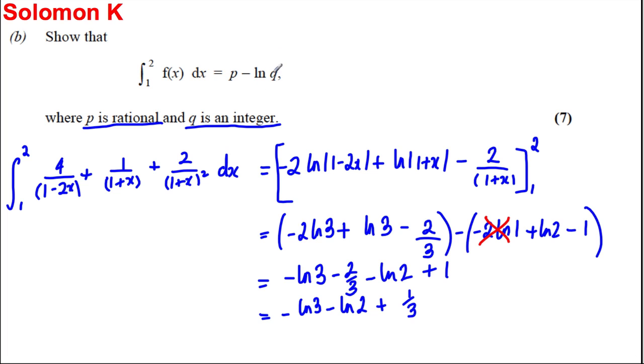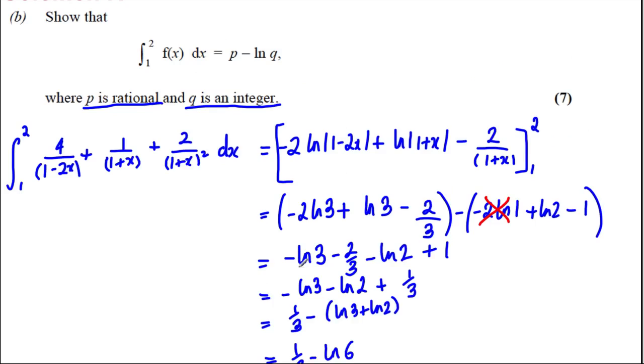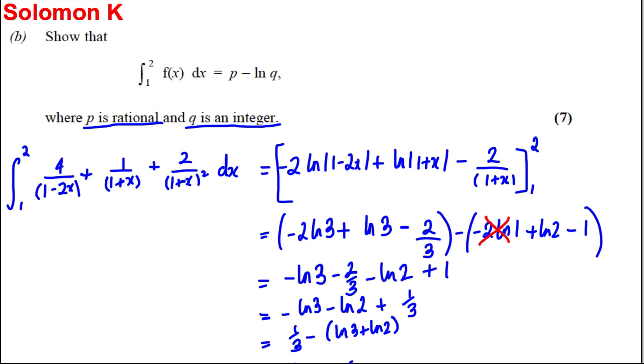Now we want it in the form negative ln Q. So we can have the third first, a third, and then we could have subtract ln 3 plus ln 2. Factorising out that minus, they combine to be ln 6. So it's a third subtract ln 6 is the answer to our integral, and we're done.